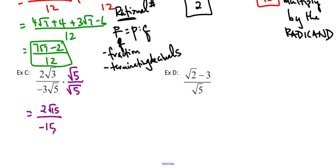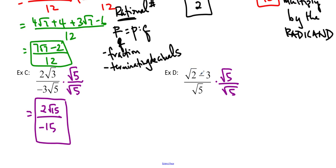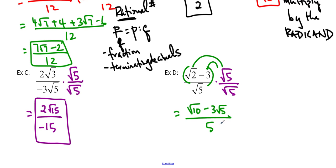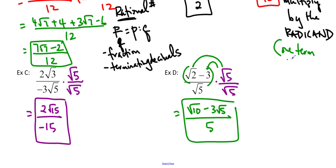Now if you don't get an integer in the bottom, then you did it wrong, because that's the whole point of rationalizing the denominator — to get rid of the square root. So if you have a square root still, then you have to try again. And I can't cancel this because only outsides with outsides and insides with insides. Here's one last one — we're going to multiply by root 5 over root 5 again. We've got two terms in the top, so make sure that you use the distributive property. We get root 10 minus 3 root 5 over root 5 times root 5, which is 5. So this is the first type where we basically have one term in the bottom — just multiply by the radicand.